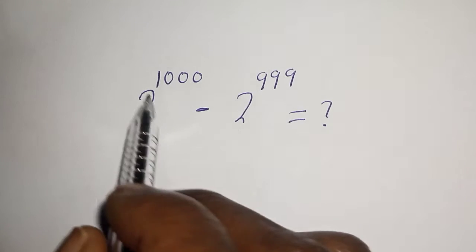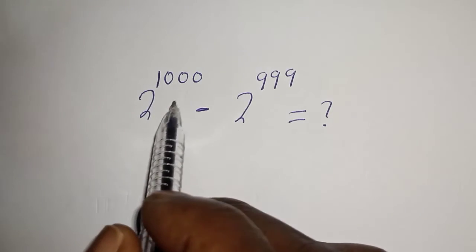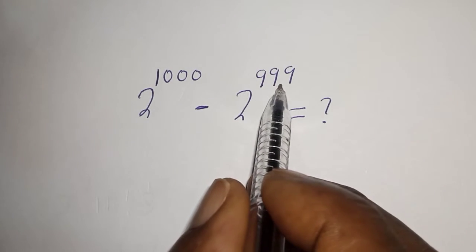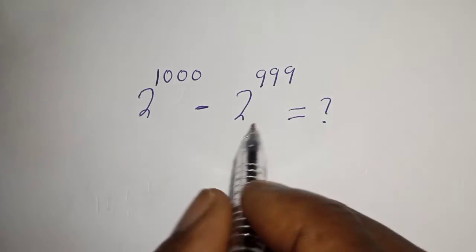Hello, welcome to Math Gist. In this class we quickly want to simplify this nice math problem without using a calculator. 2 raised to power 1000 minus 2 raised to power 999 is equal to what?